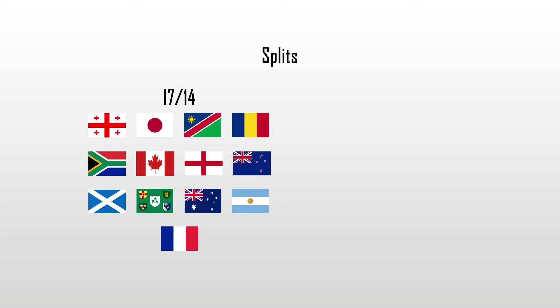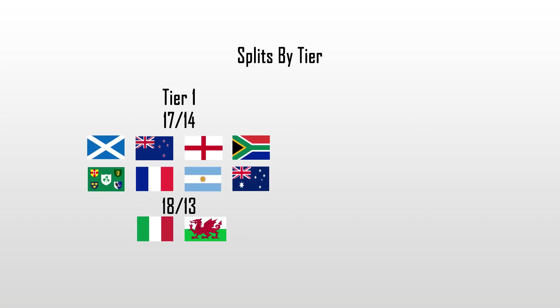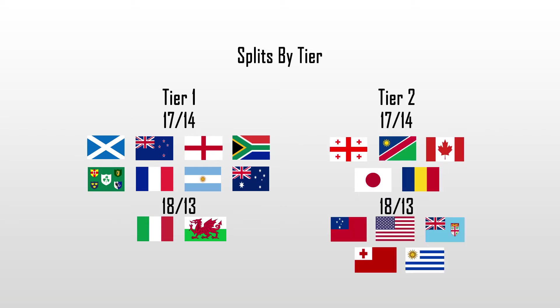If we take a look at the last World Cup in 2015, of the 20 teams, 13 went with 17-14 and 7 went with 18-13. However, if we look at the forwards-backs split by team tier, of the 10 tier 1 teams, 80% went with 17-14 and only 20% with 18-13. In contrast, among tier 2 teams it was a 50-50 split. The only reason I can think of is that tier 2 teams feel their back row players will be more fatigued playing against tier 1 teams, and thus want to be able to rotate more often.